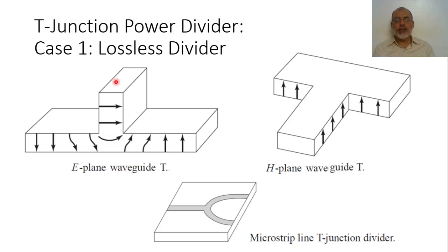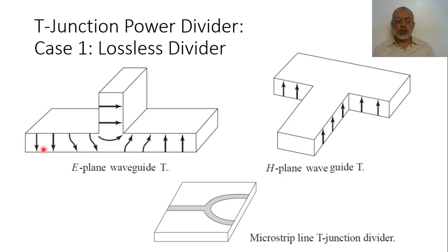Such a T-junction can be implemented in a waveguide configuration, like these two configurations, or in a printed circuit configuration like this configuration. If we are talking about the power divider, the input port will be coming from port 1 and it will be divided between port 2 and port 3. Some power is reflected at port 1 itself if the power divider is not matched.